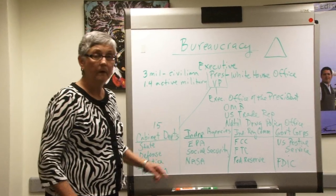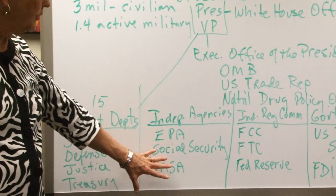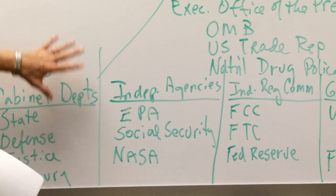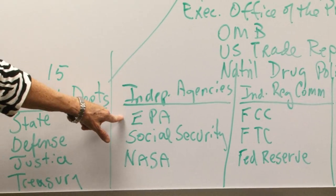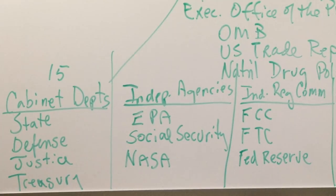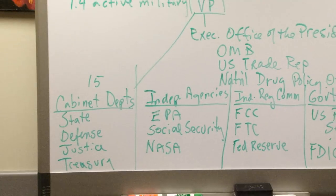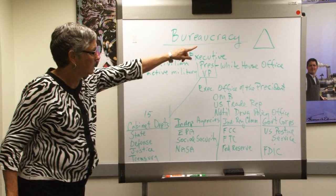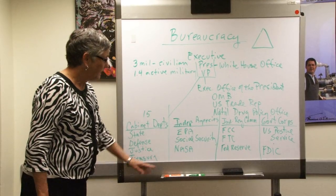Another group are called the Independent Agencies. These are smaller and generally do more specific things. Cabinet departments do lots and lots of things, but Independent Agencies like the EPA — Environmental Protection Agency — the Social Security Administration, or NASA — National Aeronautics and Space Administration — have pretty specific things that they do. Their heads at the top are also appointed by the president with the advice and consent of the Senate.